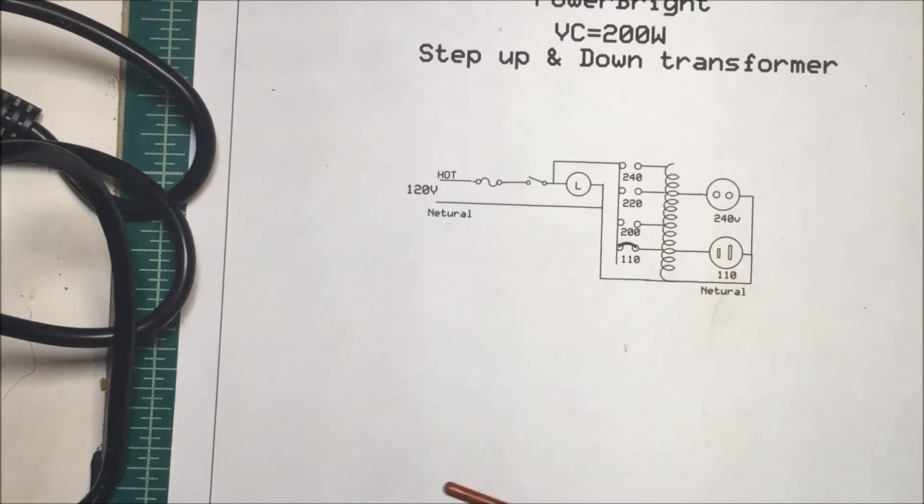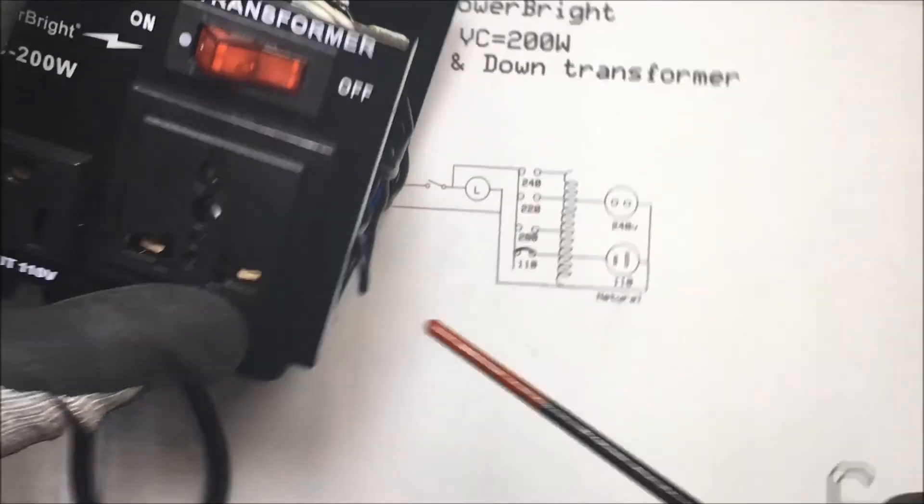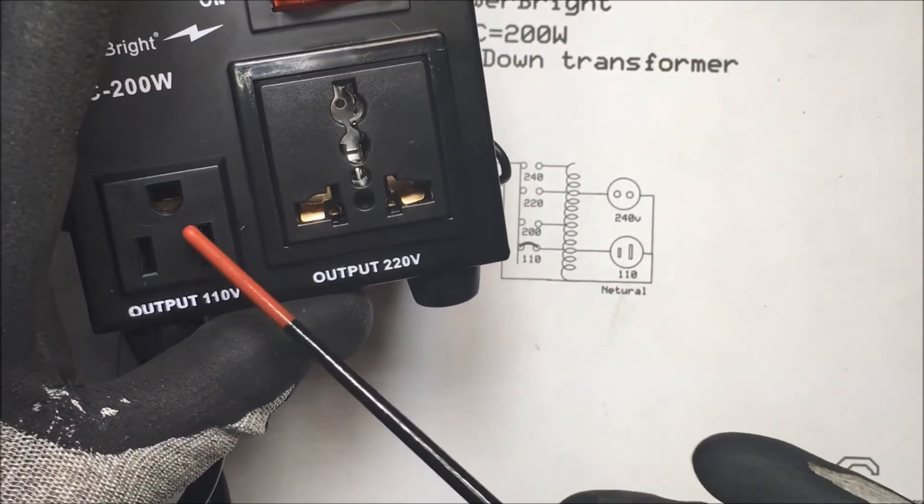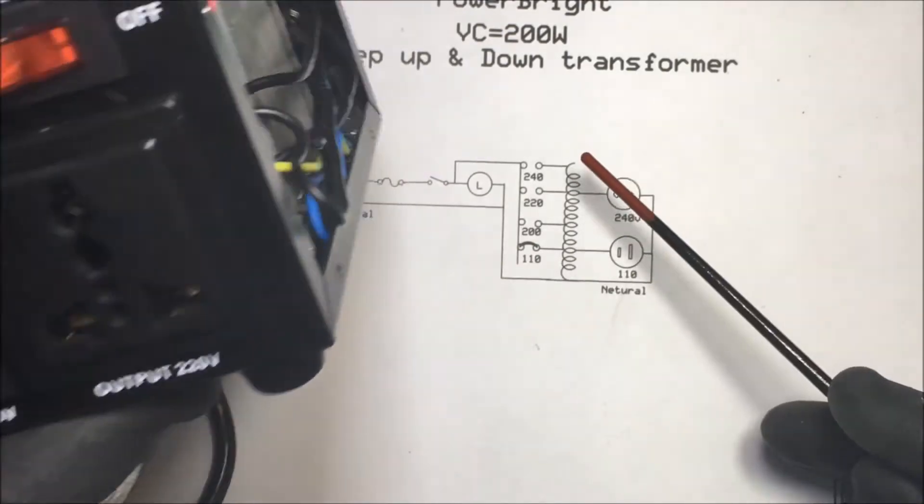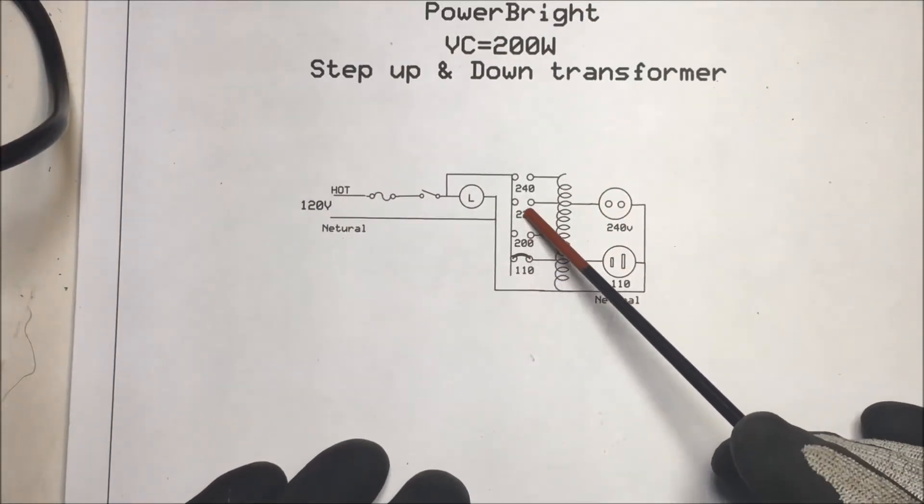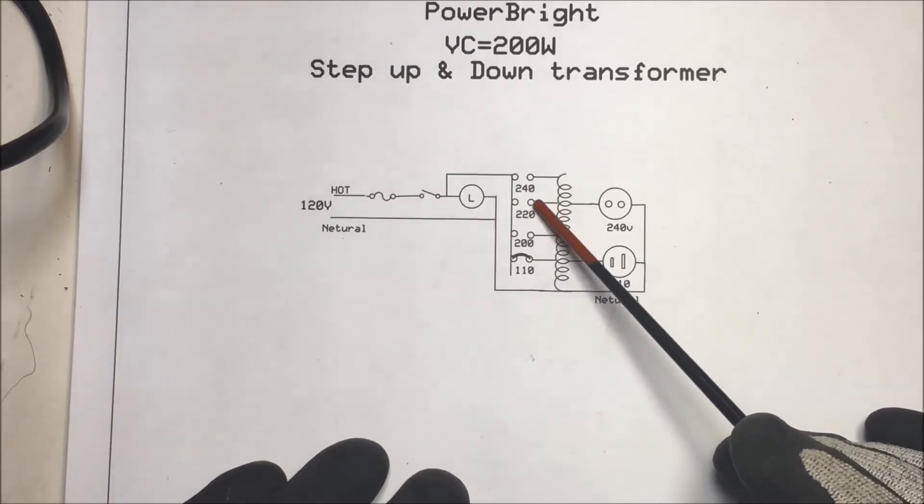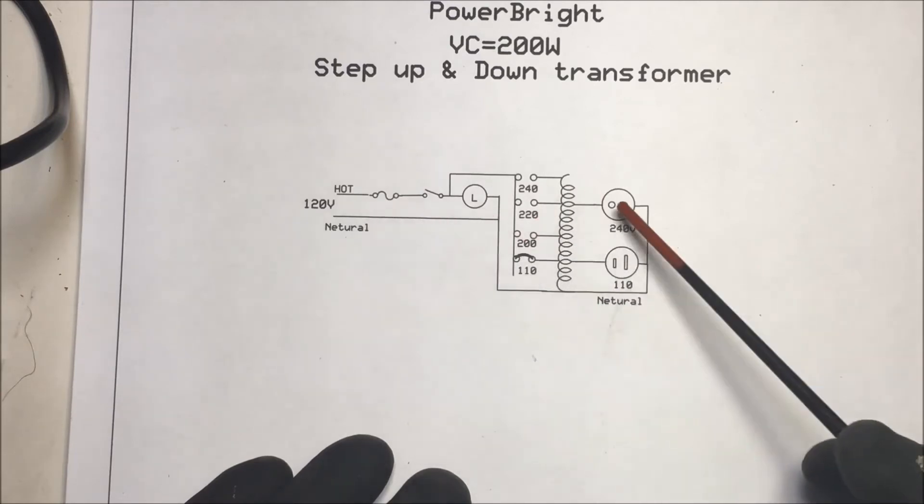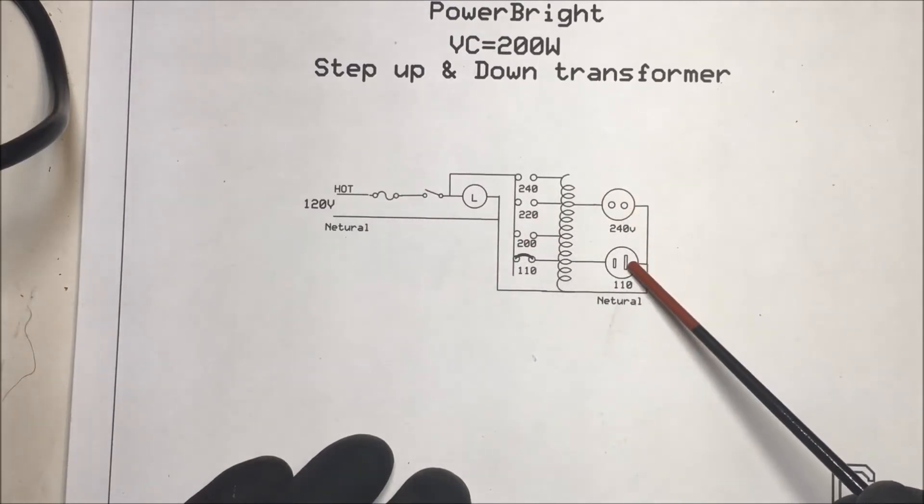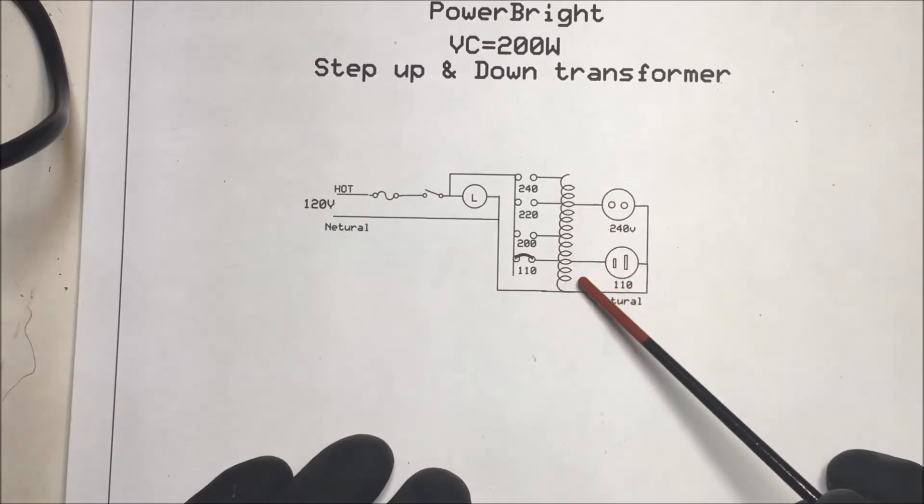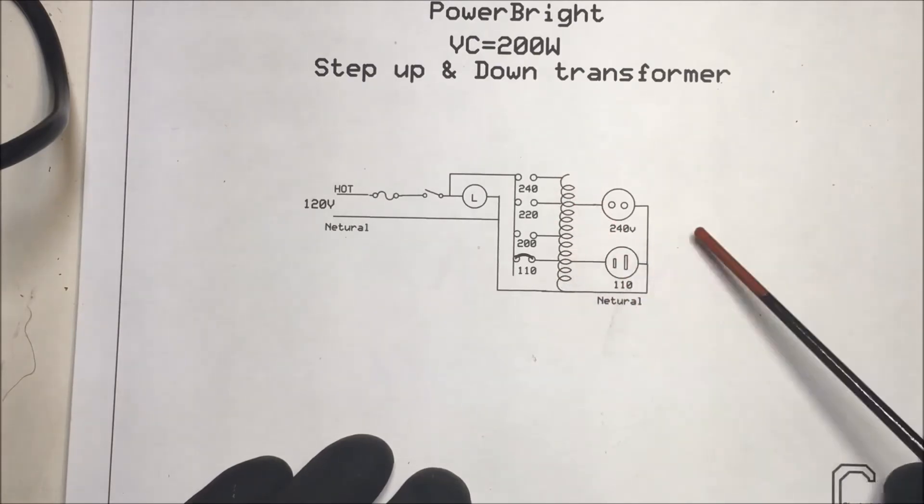When we put the jumper in here on 110, that jumper's right to this plug on this side, that's going to be 110, whatever is in your wall socket. Now if I move this thing up to the 220 spot, that's actually where the 240 is. If I plugged it into 240, then I'd get 240 out here and 110 down here.